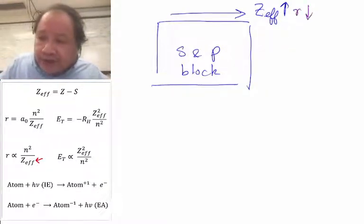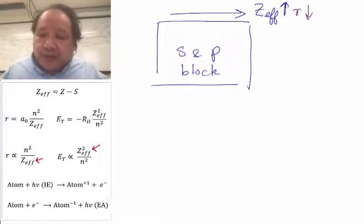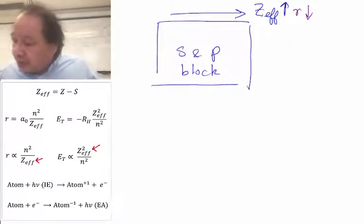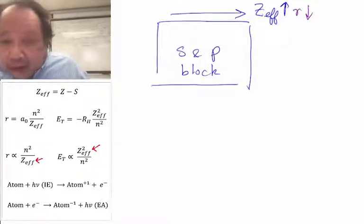And Z_eff is in the numerator here. So when Z_eff increases, E_total, magnitude of E_total is increasing.